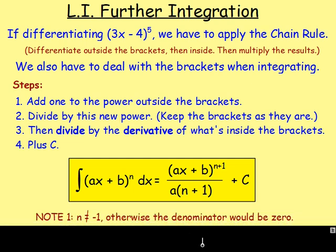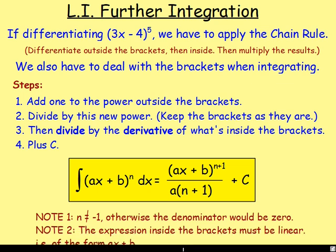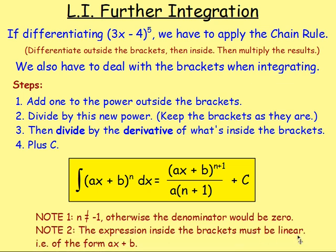A couple of notes. First, n cannot equal negative 1. You cannot have, for example, (2x + 7)^(−1), because if you add 1 to the power, you'd get 0, and then you're dividing by 0, which you can't do. There is another way to handle that case, which will be introduced in Advanced Higher Maths. Second note: the expression inside the brackets must be linear — the highest power of x must be 1. It must be of the form ax + b. You cannot have something squared inside the brackets.